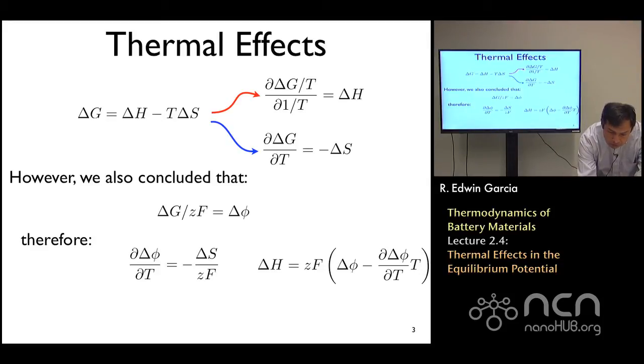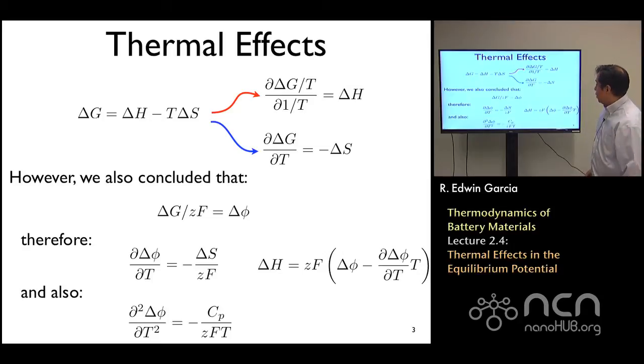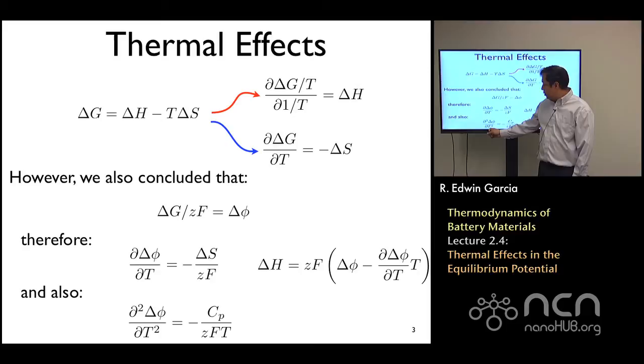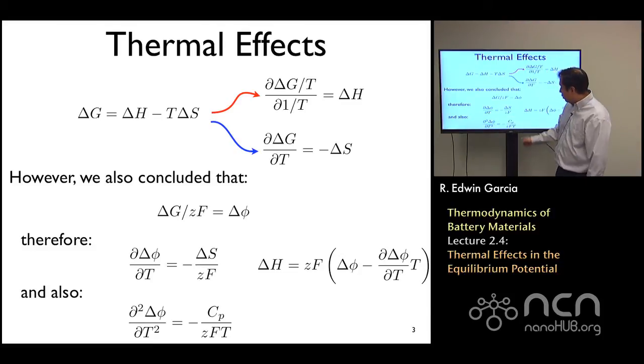Another number that comes out of this is the curvature of the voltage as a function of temperature, which we can find very easily by simply taking the derivative of this expression that we already have with respect to temperature. That means, because zF is a constant, if I take the derivative of the entropy with respect to temperature, that basically gives me the heat capacity divided by T.